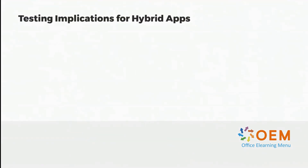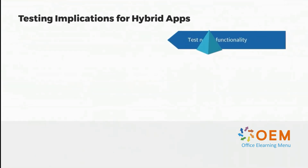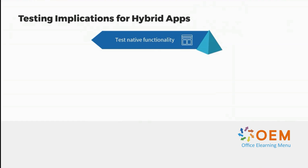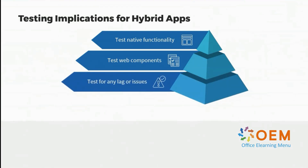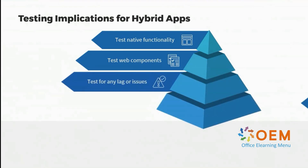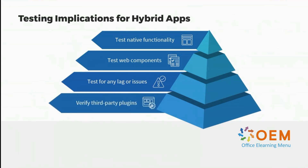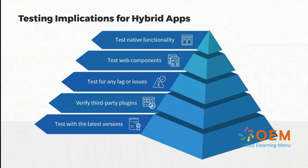For hybrid applications, we have to test native functionalities to make sure the application is performing its intended functions. We also have to test the web component to ensure the application is accessible across the web. We need to test for any lags or issues using a monitoring tool, verify that third-party plugins are accessible and providing the correct device functionality, and test with the latest version to make sure the application performs regardless of which operating system version it is running on.